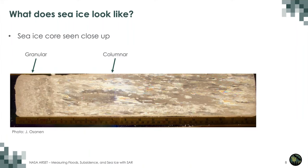Looking at a thin slice of a sea ice core, we can see that the crystal structure varies significantly with depth. At the top we have granular ice, and lower down more columnar ice. This vertical structure of the crystals also affects what the radar can see.